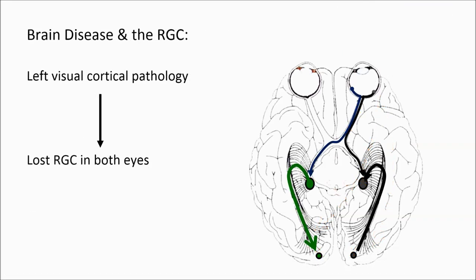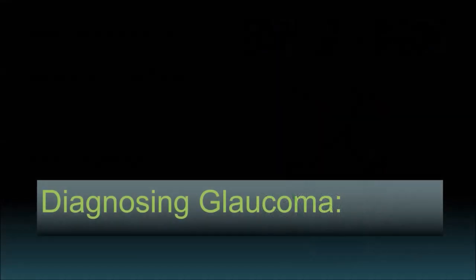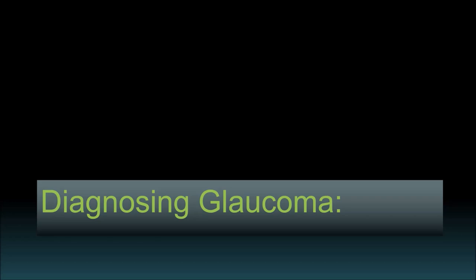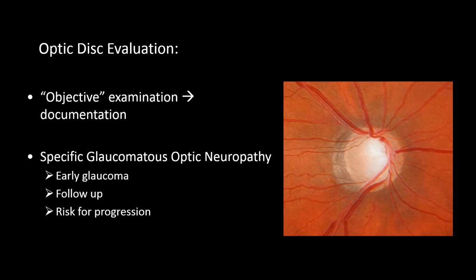In the presence of left occipital cortical pathology and in the absence of ocular disease, the lost ganglion cell layers seen on OCT correspond to the right hemianopic visual field defect, reflecting the damage of the retinoganglionic cells resulting from the cortical lesion. Being a chronic, blinding, widespread neurodegenerative disease, the diagnosis of glaucoma may be best achieved using multiple modalities. Optic disc examination is an objective test that allows us to detect specific features of glaucomatous optic neuropathy and document our findings at any stage of the disease.